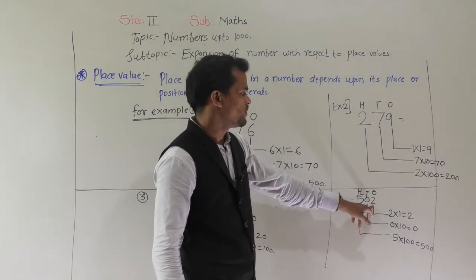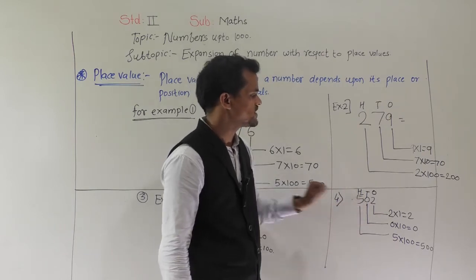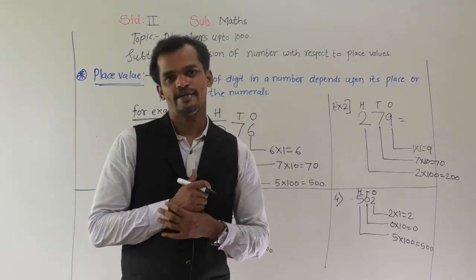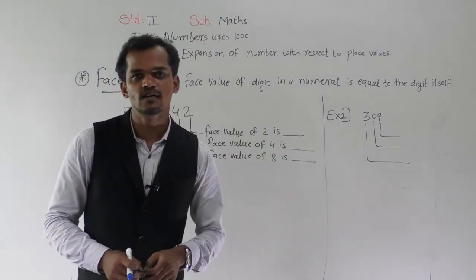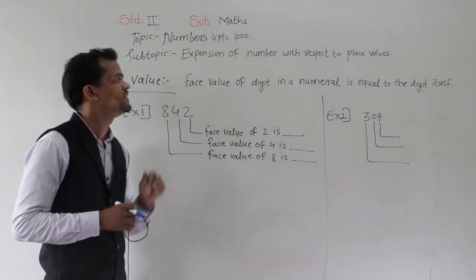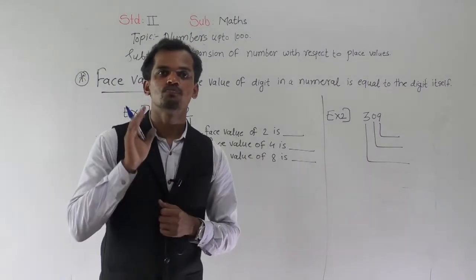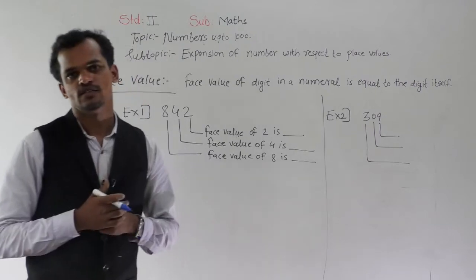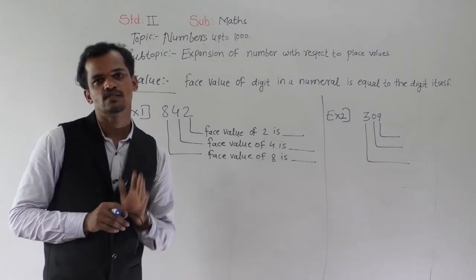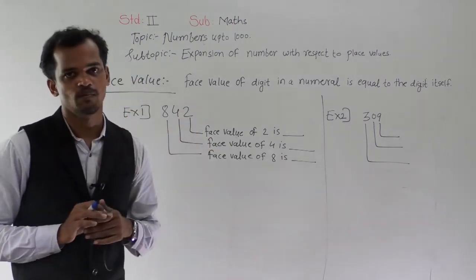So here, place value of 2 is 2, place value of 0 is 0 and place value of 5 is 500. Place value depends on the place of the digit. Now we will see the face value. Face value of a digit in a numeral is equal to the digit itself. Face value does not change — it remains the same.